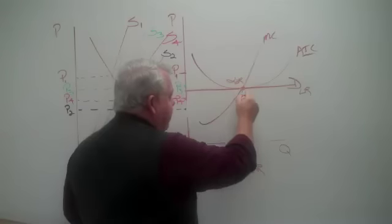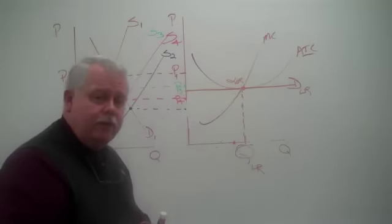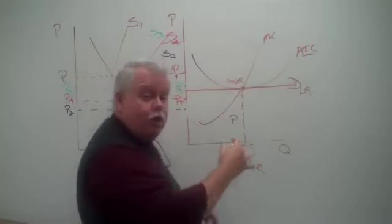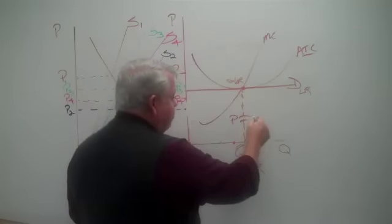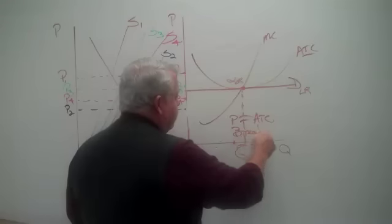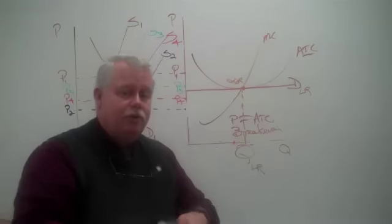At this level of output, how's the firm doing? Are they making a profit, taking a loss, or breaking even? At this point, the price they are charging exactly equals the average total cost, and so they are breaking even. This becomes the long run equilibrium for the firm in perfect competition.